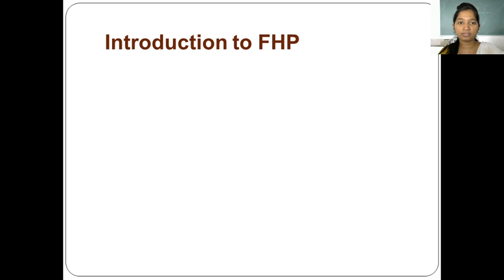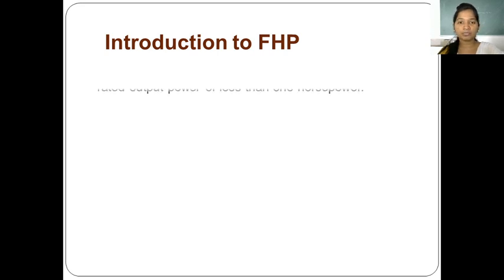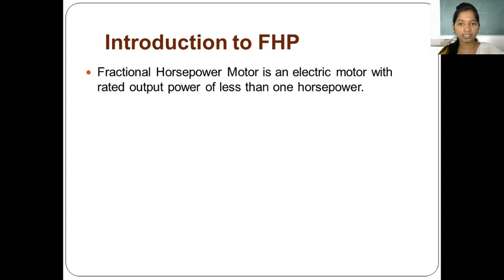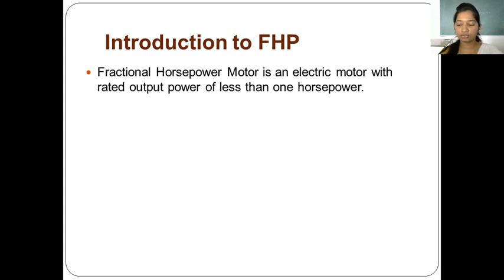Let's start with our introduction to Fractional Horsepower Motors. The name indicates that it is having horsepower in fractional form. The Fractional Horsepower Motor is an electric motor with rated output power of less than 1 horsepower. We have seen 2 HP and 1 HP motors, but fractional horsepower motors have HP less than 1 — for example, 0.5 or 0.7 HP.